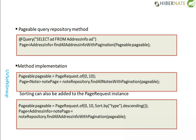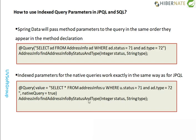This is one of the most important things to discuss. You see the queries here are exactly the same as previously. There are two parameters, and this is the index-based parameter — Spring will pass the method parameters into the query in the same order they appear in the method declaration. So the order matters: if status is in the second position but type is first, it doesn't work. Index one is status and index two is type — this is called index-based query parameters.